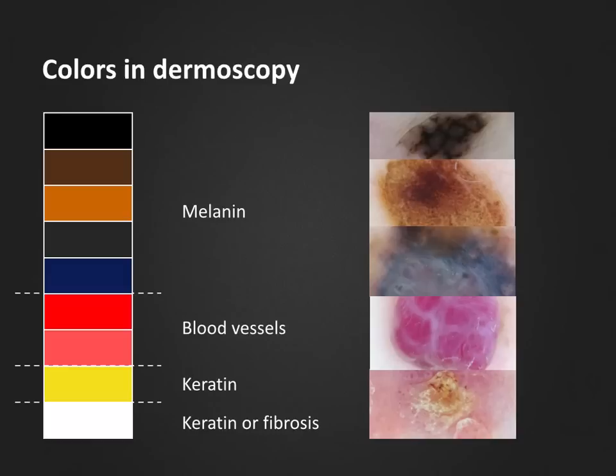When looking at skin lesions through the dermoscope, a range of colors can be seen. In pigmented lesions, we will see a range of black and brown colors if the melanin is in the epidermis, or gray to blue tones if the pigment is deeper down in the papillary dermis. Meanwhile, blood and blood vessels are characteristically red or pink in color.